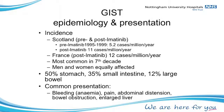After imatinib, or Gleevec, came along, suddenly oncologists said to the pathologist, 'I want to know what this is, because I can potentially treat it.' The pathologists started to develop techniques to identify GIST and the incidence more than doubled. The incidence now is around 11 or 12 cases per million per year, and in Europe that is roughly the rate across the continent.